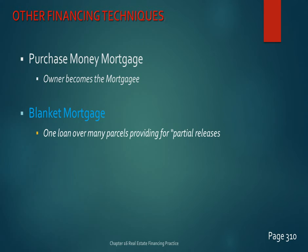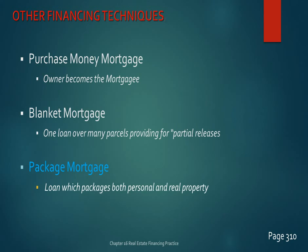A package mortgage covers not only real property but also personal property. Think of a condominium — when you purchase a brand-new condo, the loan covers not just the real property but also the dishwasher, dryer, appliances, and other personal property included in the sale. A condo loan would typically be considered a package mortgage.